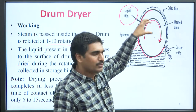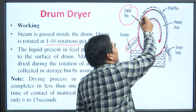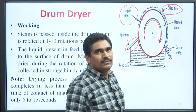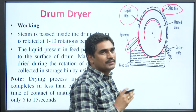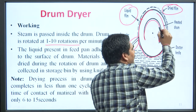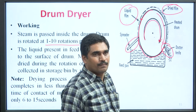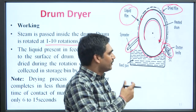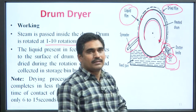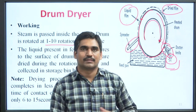Since hot steam has already been passed through the drum, the surface of the drum is heated. Due to that heat, heat is transferred to the liquid film, and the liquid film gets dried. A dry film forms over the surface of the heated drum. As the drum moves further, this dried film is removed by the doctor's knife, and the dried solid particles are collected into the collecting chamber.